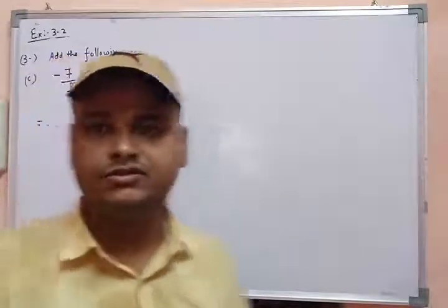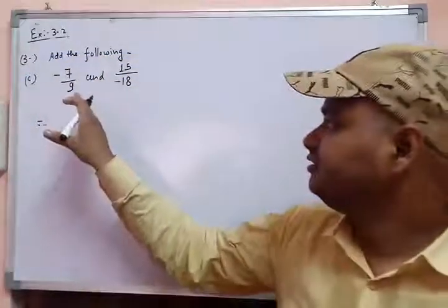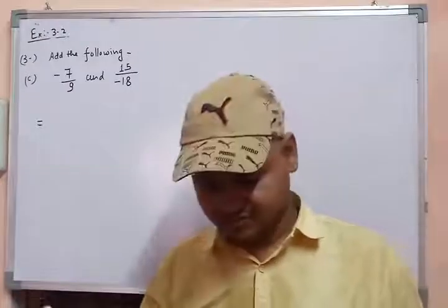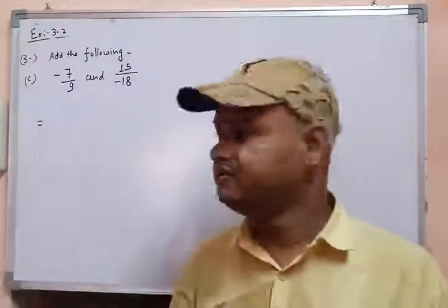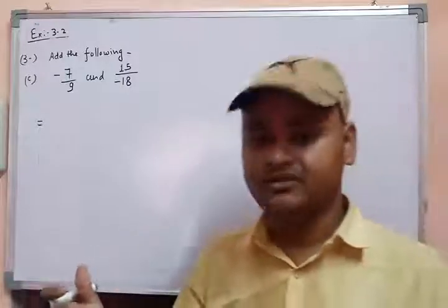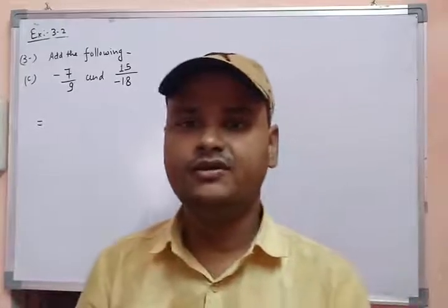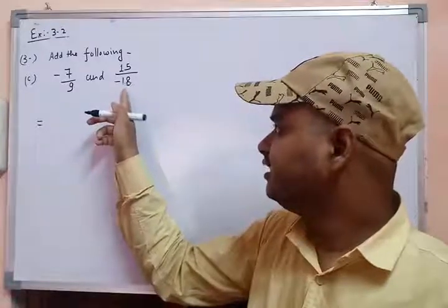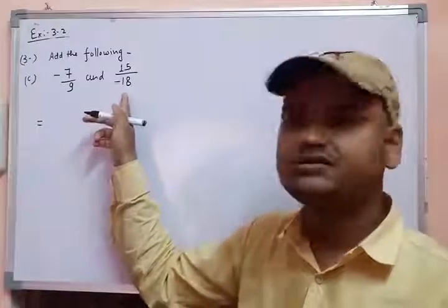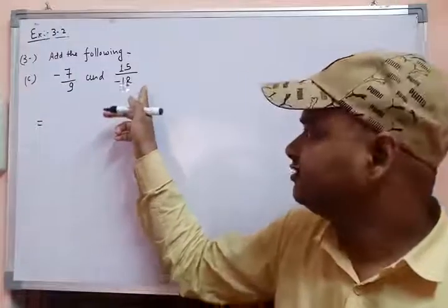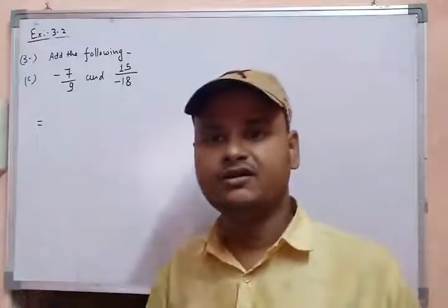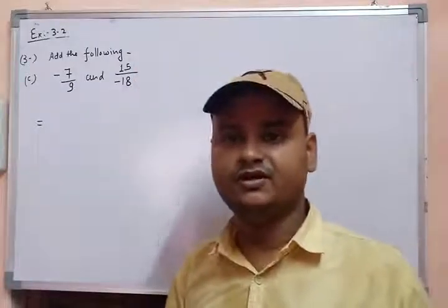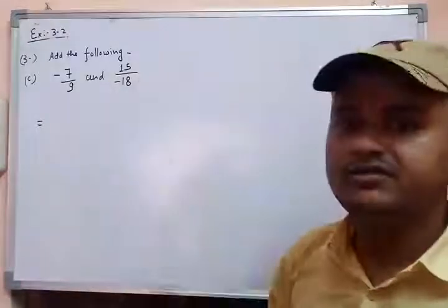Now students, question number 3 is a very interesting question. Here you have to add again, but this question does not have a standard rational number. As you studied, to check if a rational number is standard, look at the denominator — if it has a negative sign, it is not standard. So first of all, you have to convert this rational number into standard form by multiplying both numerator and denominator by minus 1.